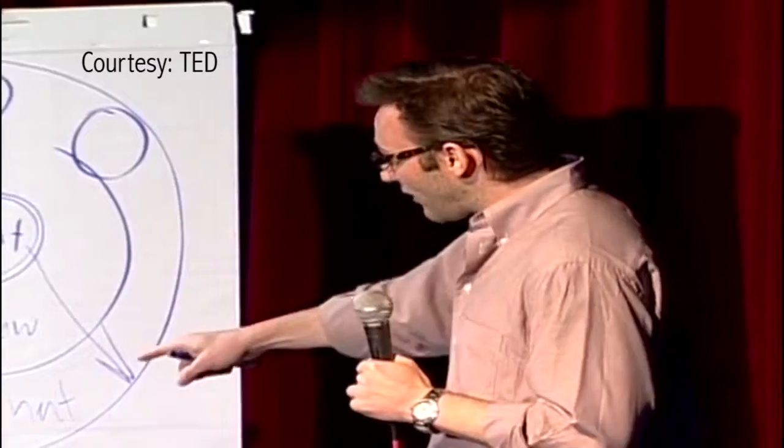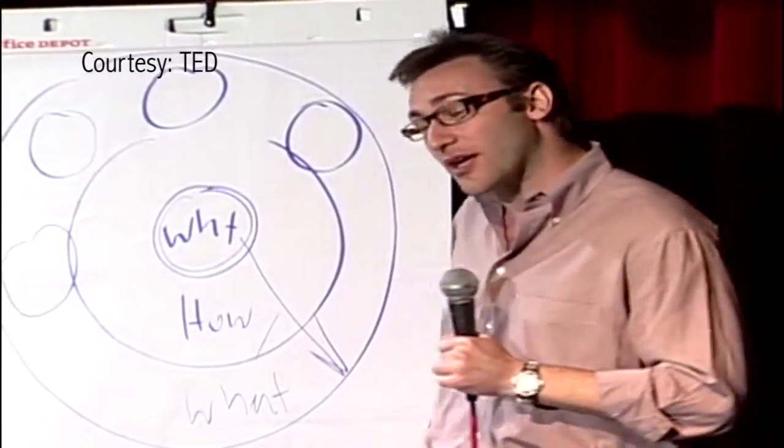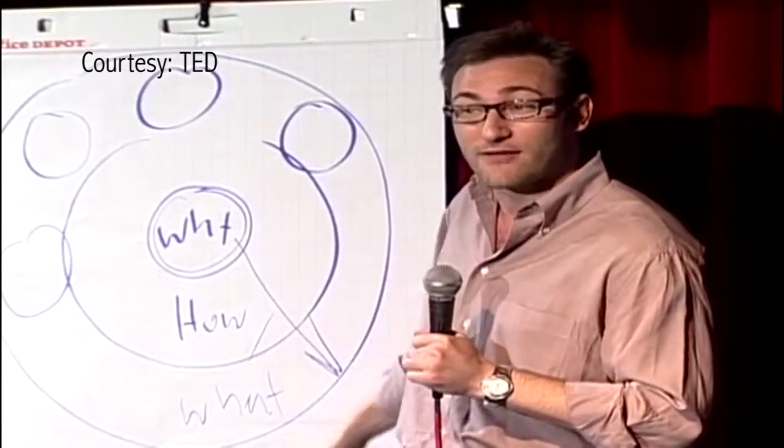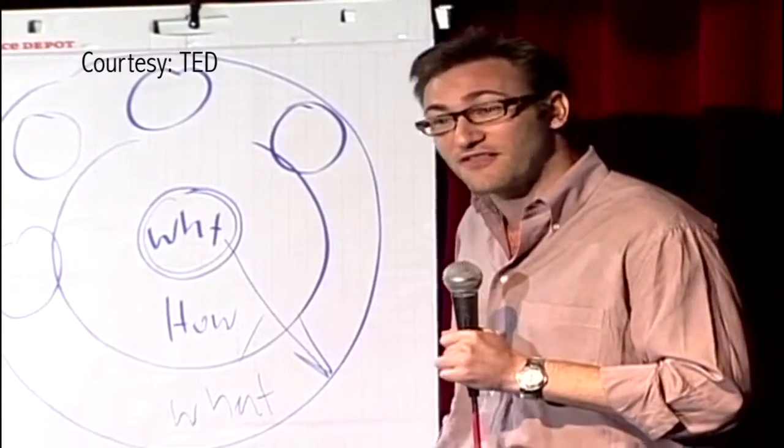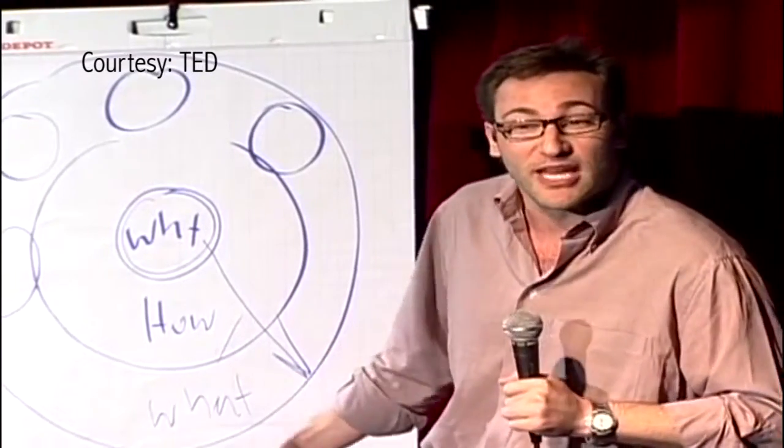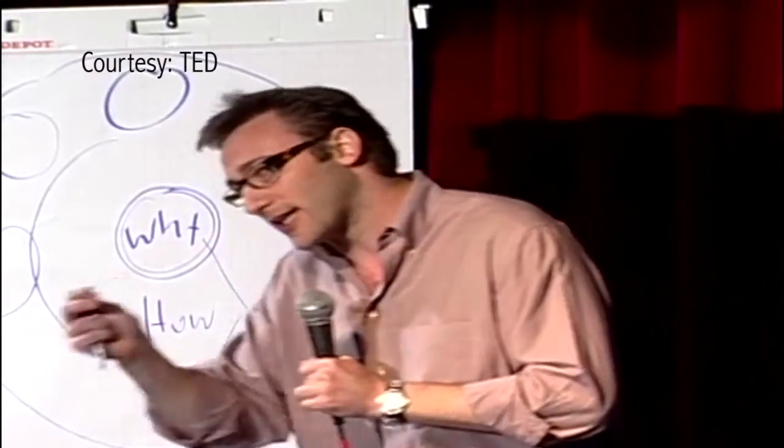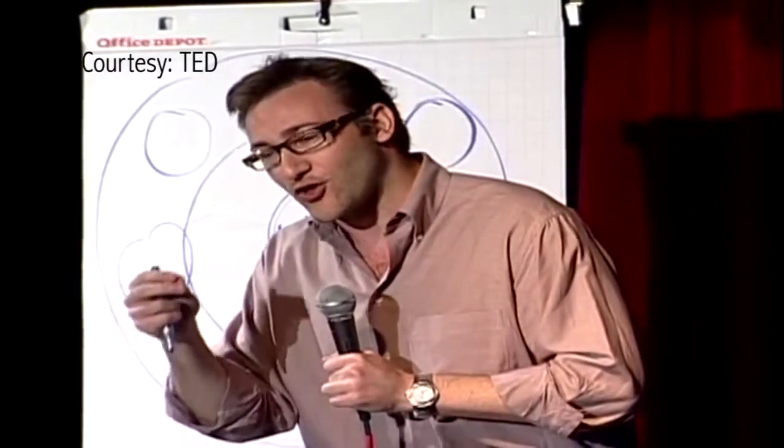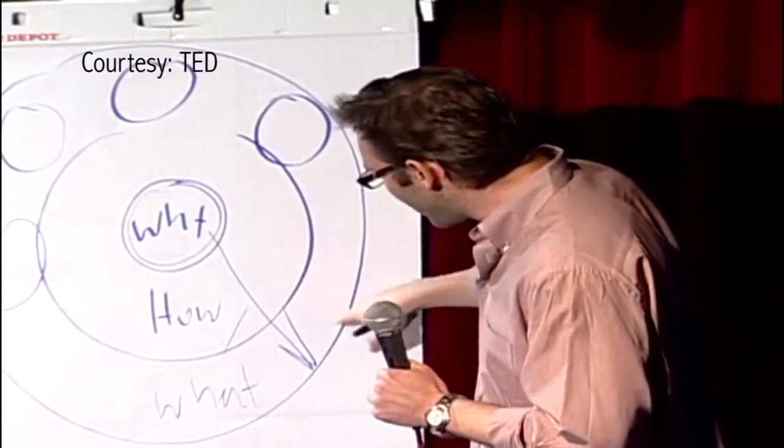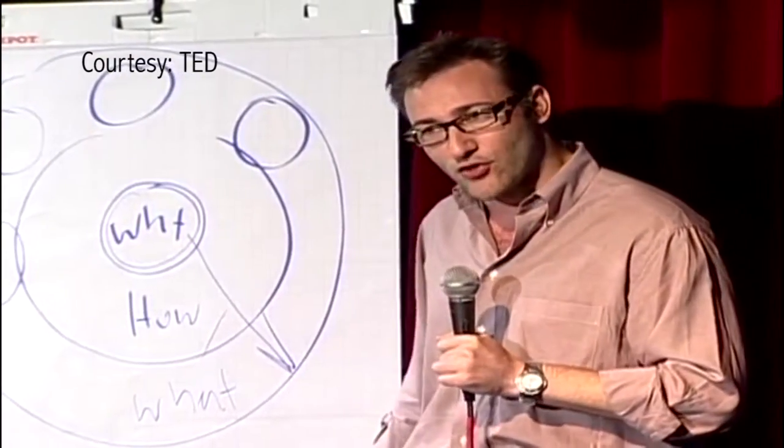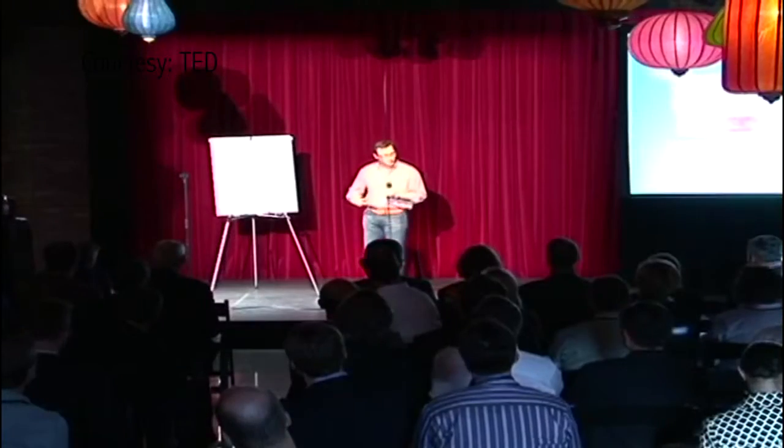In other words, when we communicate from the outside in, yes, people can understand vast amounts of complicated information like features and benefits and facts and figures. It just doesn't drive behavior. When we communicate from the inside out, we're talking directly to the part of the brain that controls behavior, and then we allow people to rationalize it with the tangible things we say and do. This is where gut decisions come from.